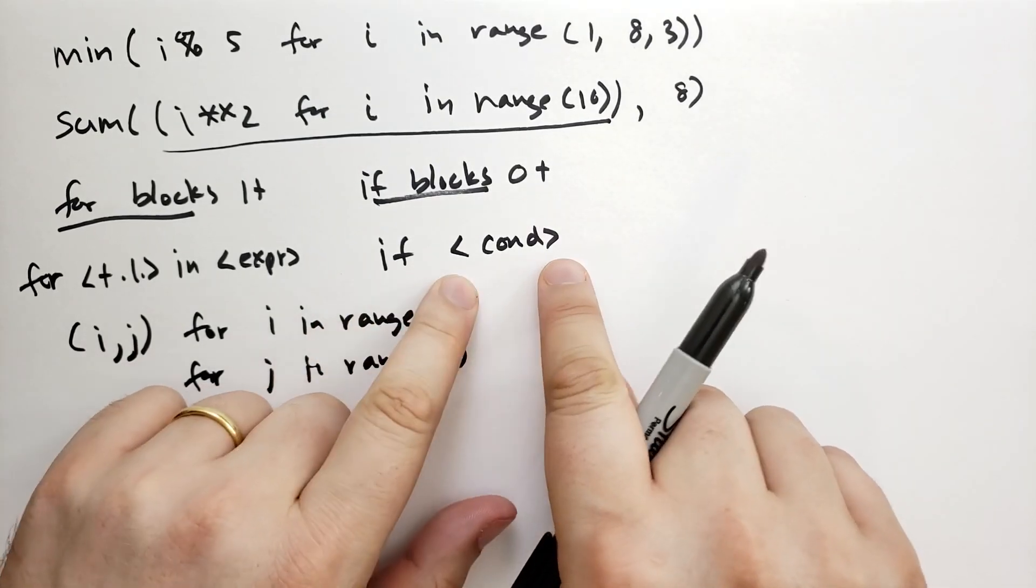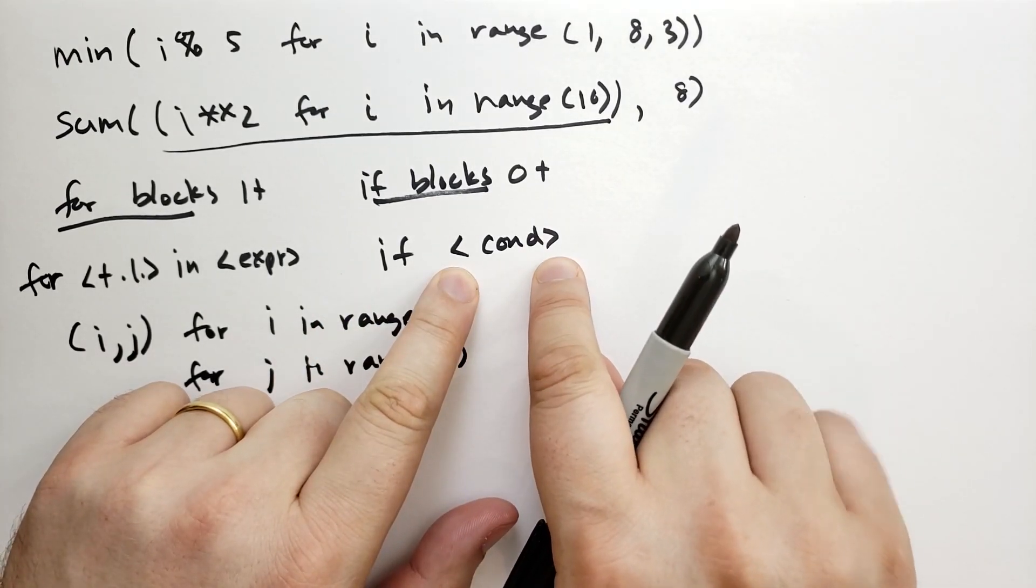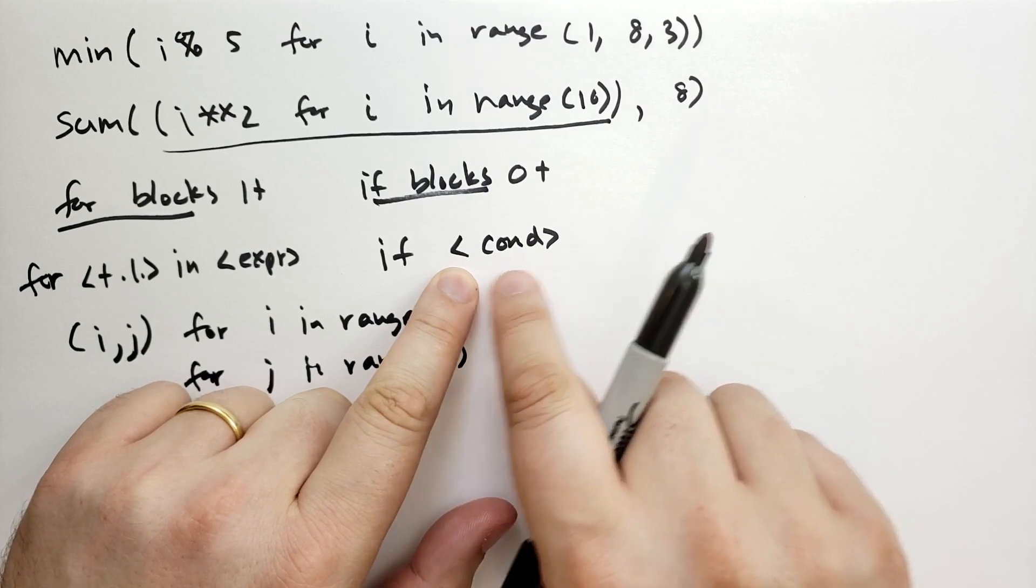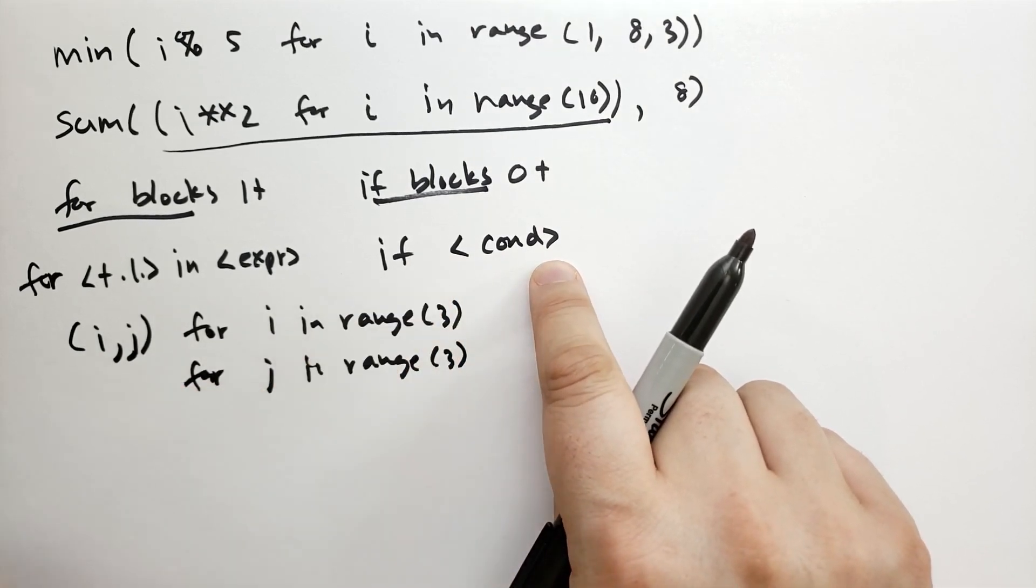What if blocks do is if that condition is not met, it will not return that item from that sequence. So it's a way to filter out things.